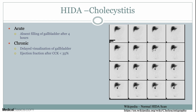Essentially, you're giving a radiotracer to the blood that gets taken up in the liver, gallbladder, the biliary system, and then also small bowel. What you're looking for in a normal situation is for the gallbladder to show up — we see the gallbladder appearing in each of these images, and that's a normal exam.